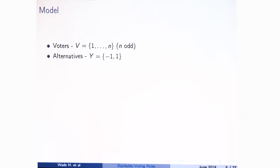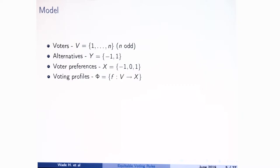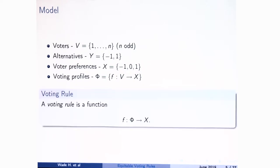Our setup is fairly standard. We have just two alternatives, minus one and one, and voters can be indifferent also — that's what the zero is there for. A profile is just a preference over the two alternatives for every voter, and a voting rule takes a voting profile and spits out an aggregated preference. It might output indifference; it doesn't actually have to choose one of the candidates.